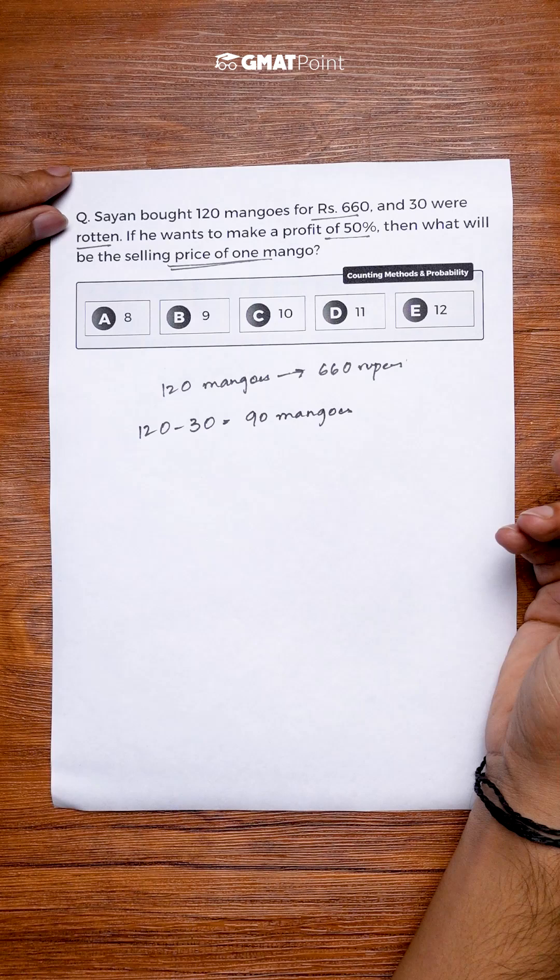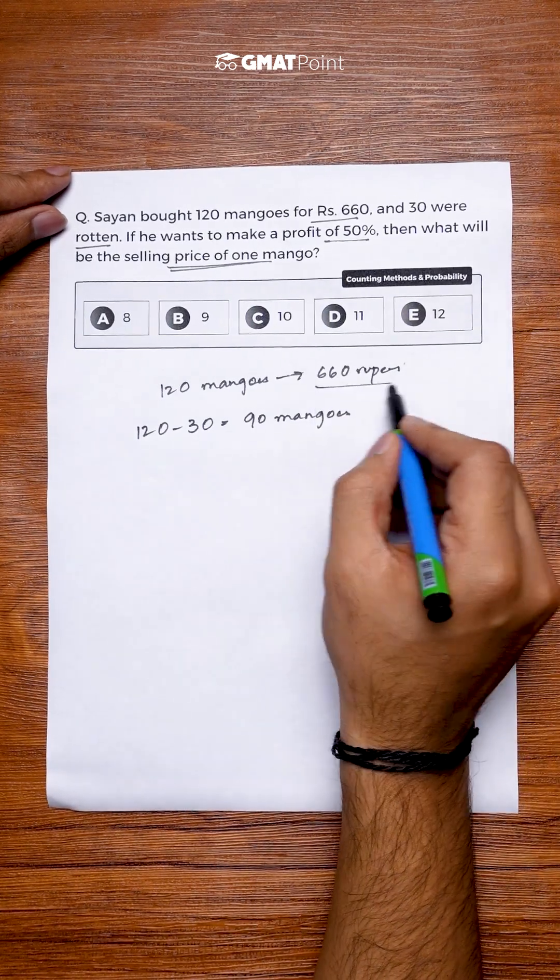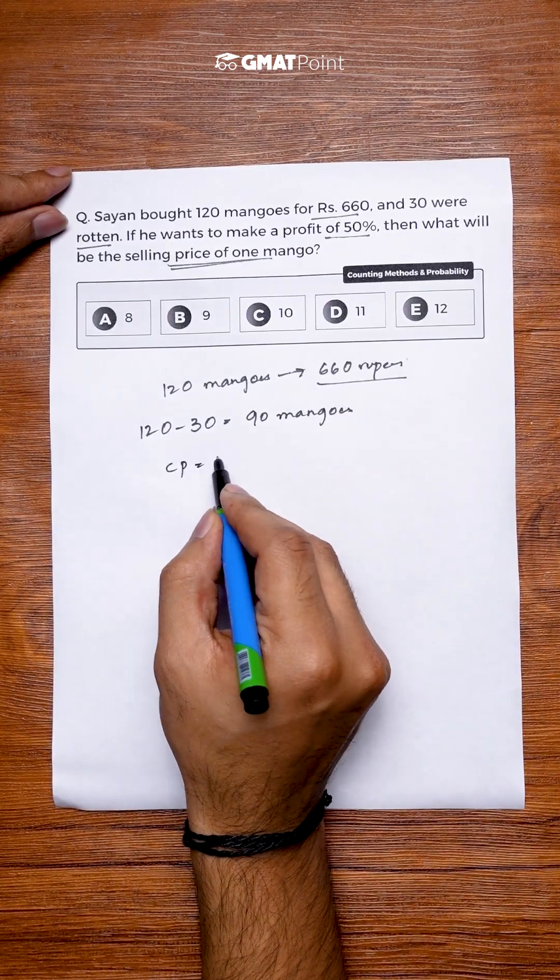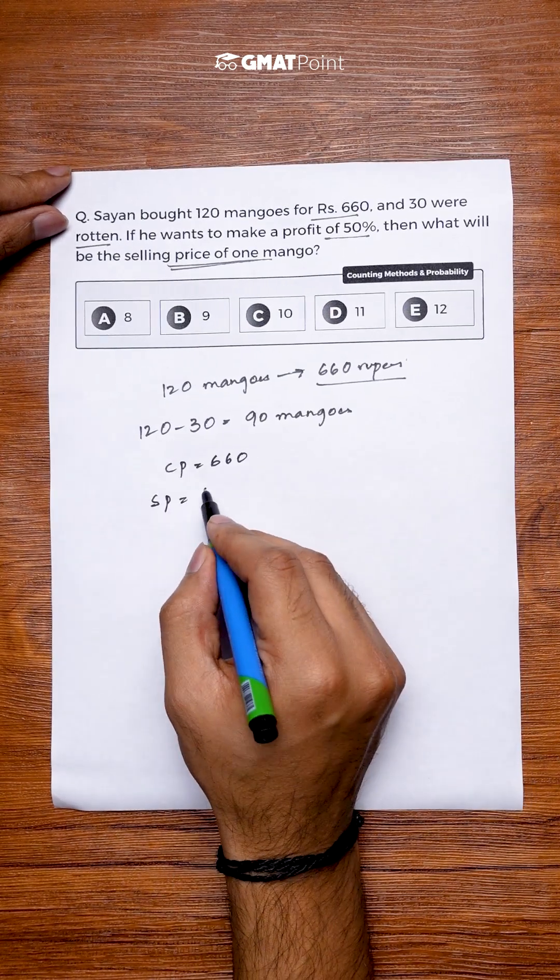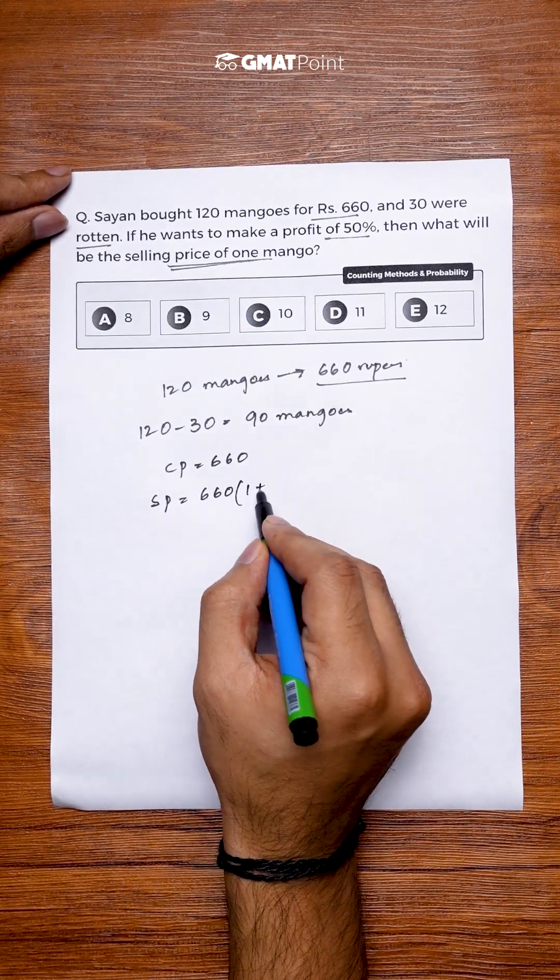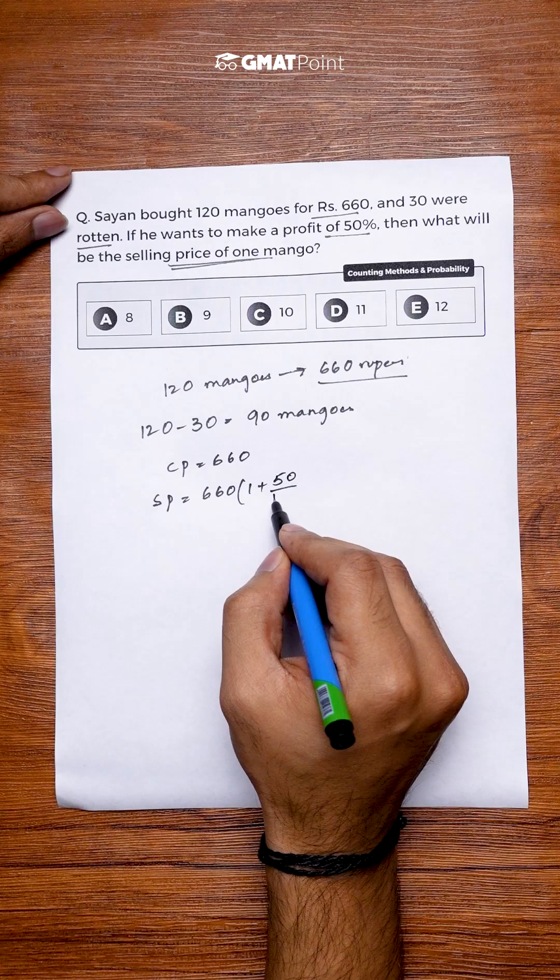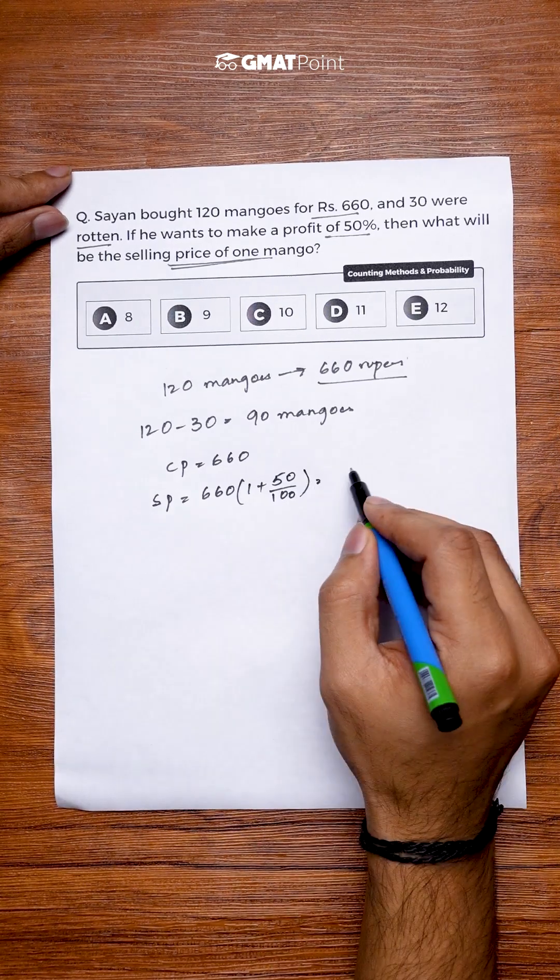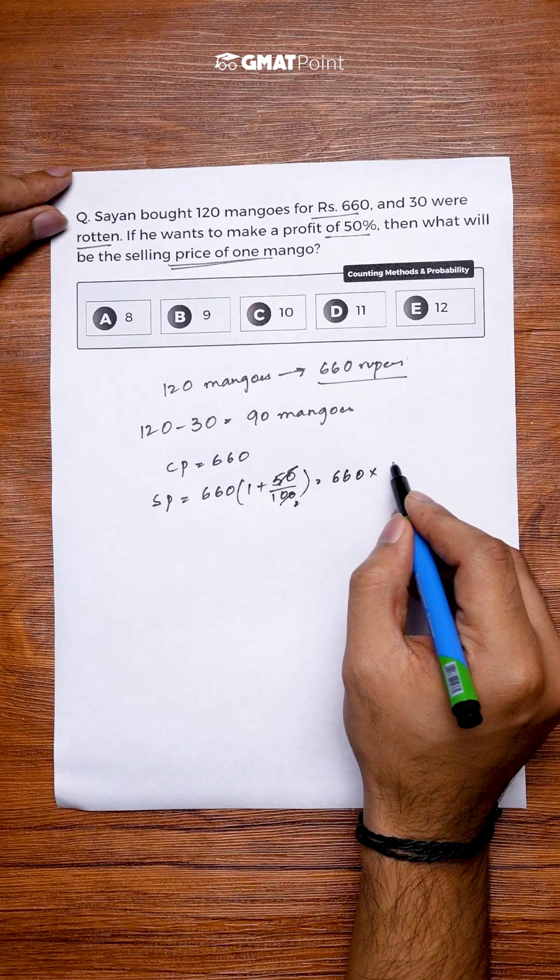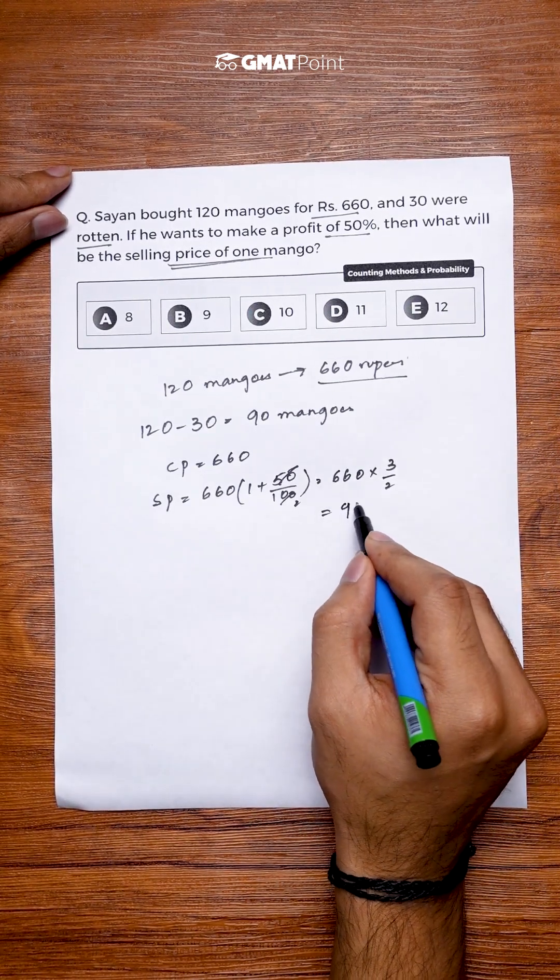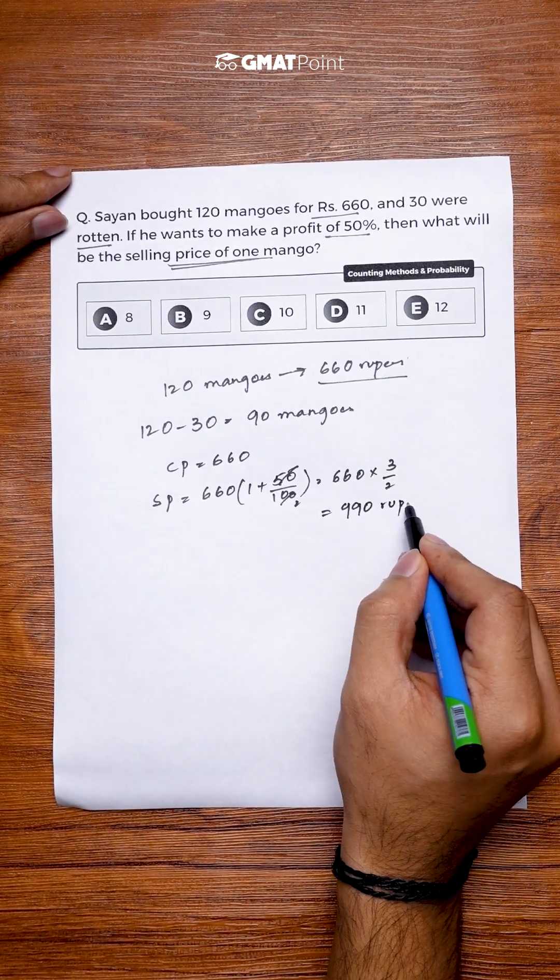Now we are told that he makes a profit of 50 percent. Since the cost price given is 660 rupees, we can calculate the selling price to be 660 into 1 plus 50 percent which would be 50 by 100. This is equal to 660 into 1 plus 1 by 2 which is equal to 3 by 2. So this value is equal to 990 rupees.